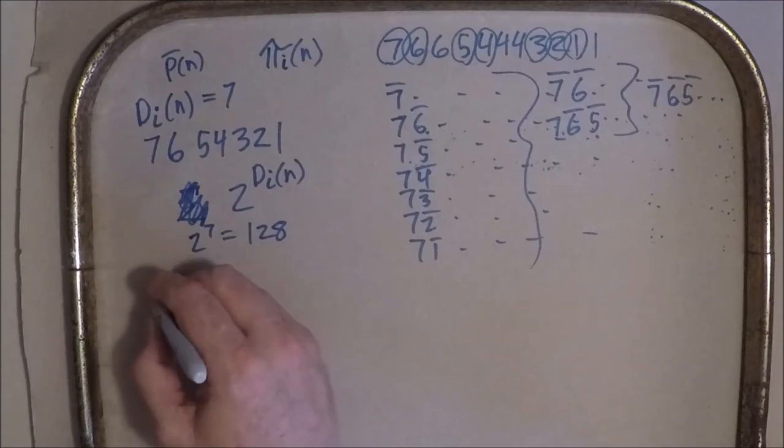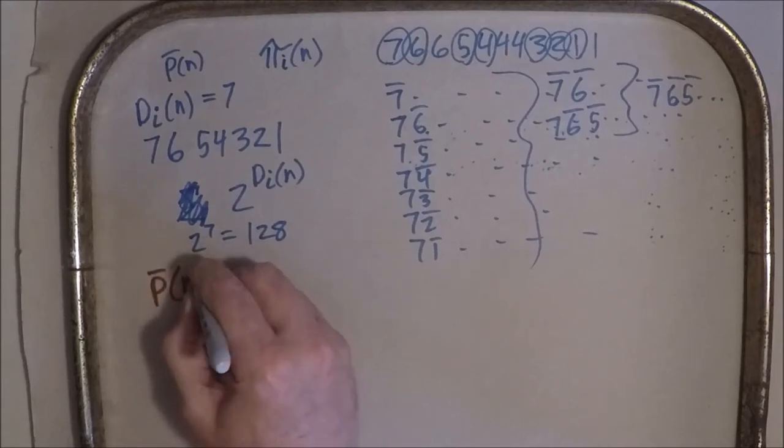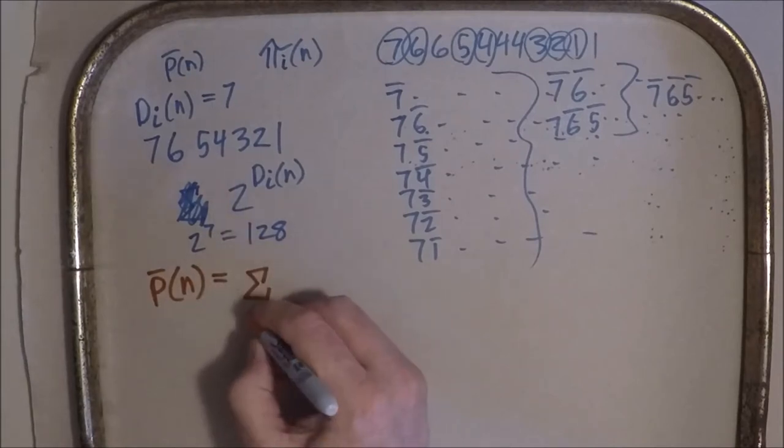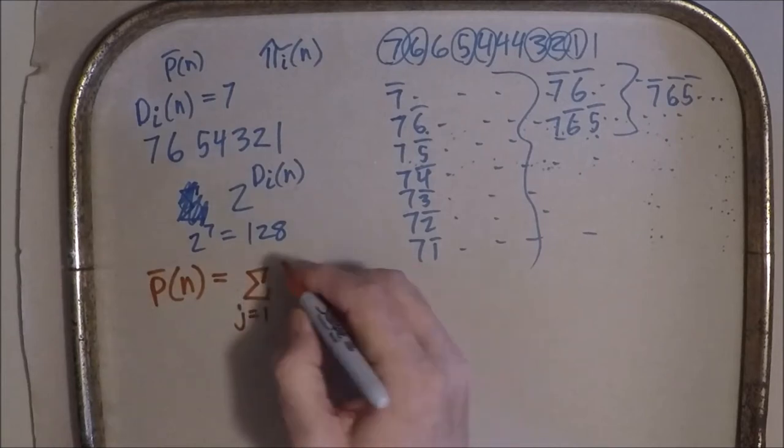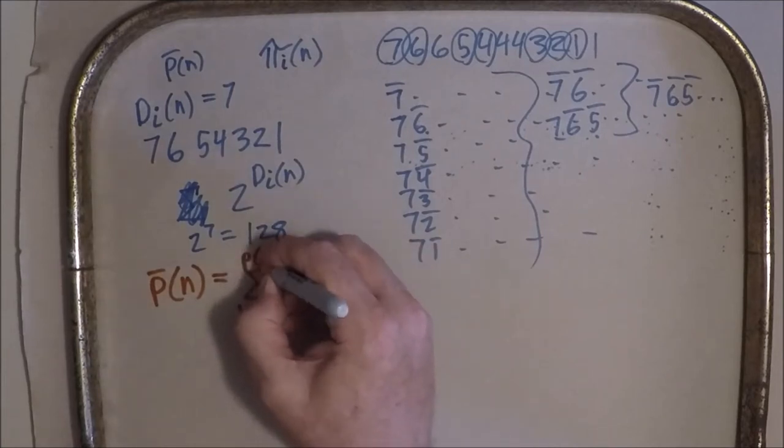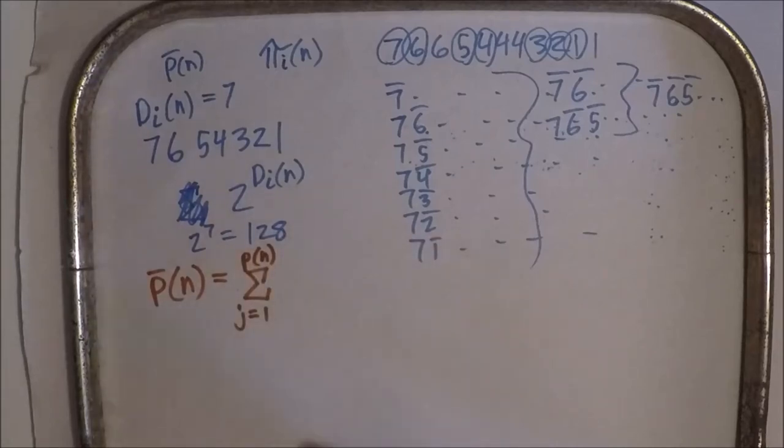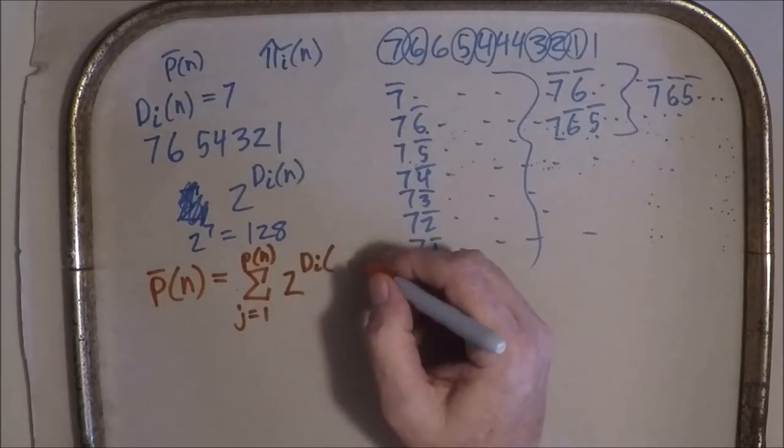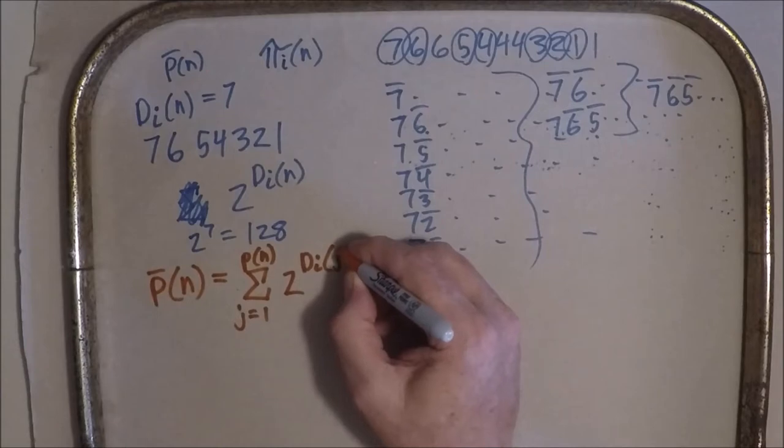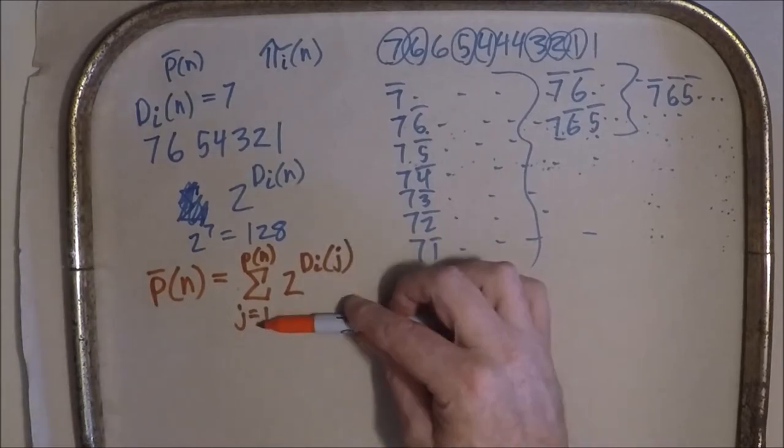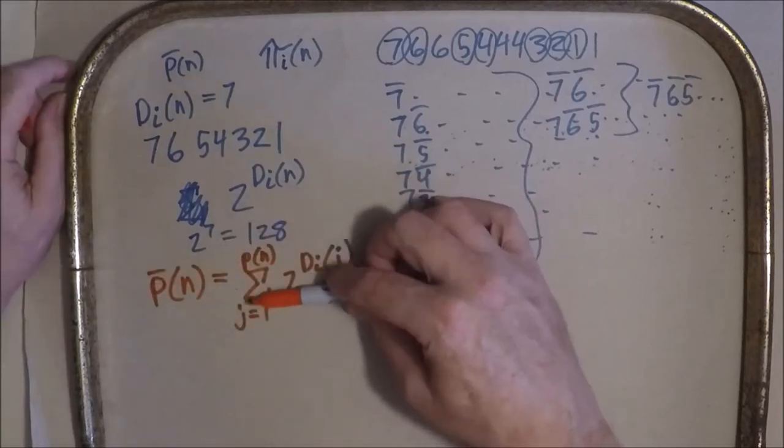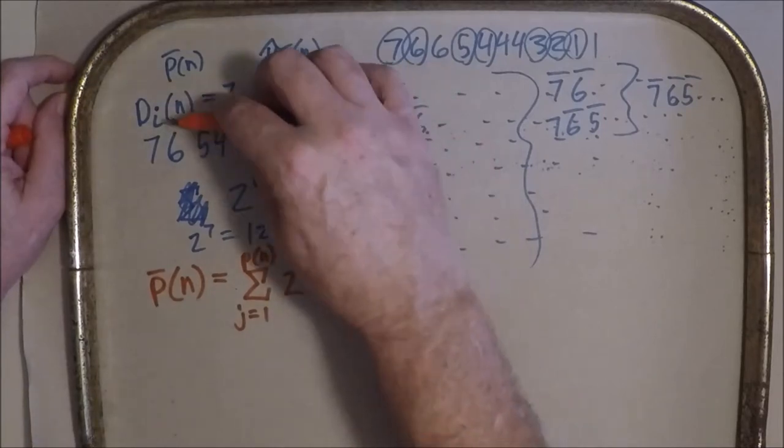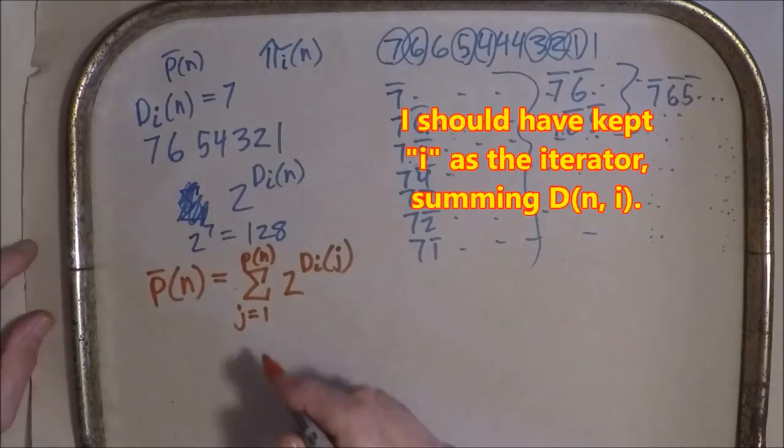So, we can say that p of n, the over partitions of n, equals the sum, I'm going to say j here, equals 1 to p of n, just the regular partitions of n, 2 to the di of j. So, for each partition of n, we're adding 2 to the di of j, where di is the number of distinct parts within that partition. And that's it.